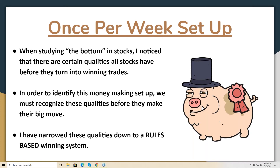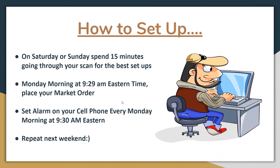This is a once-per-week setup. When studying bottoms in stocks, I noticed that certain qualities appear before stocks turn into winning trades. I've narrowed these down to a rules-based winning system I've been trading and perfecting for about three to four years. Every Saturday or Sunday morning I spend 15 minutes going through my scan to find the best setups. Monday morning, one minute before the market opens, you place your market order. Set your alarm on your cell phone every Monday so you don't forget to place that order right at the open.